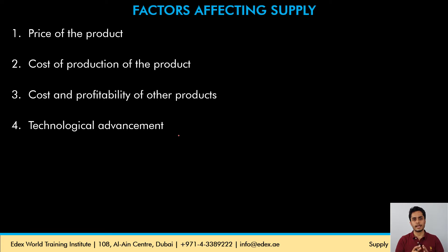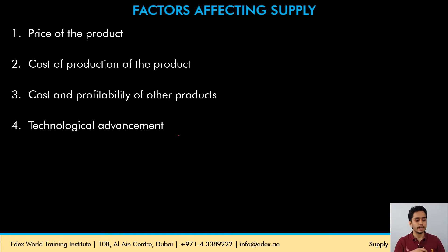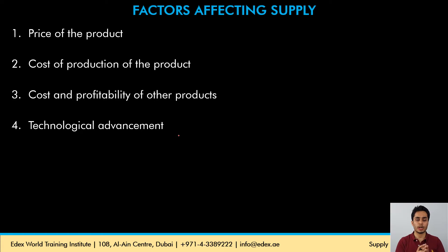Technological advancement can happen in the industry — in terms of better machinery, lower cost production, or faster production. In any case, the cost of production of the product will fall and the product will be more profitable, so the producer will increase the supply.